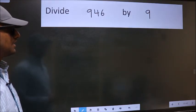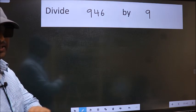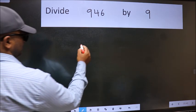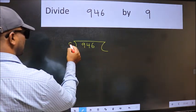Divide 946 by 9. To do this division, we should frame it in this way: 946 here and 9 here.